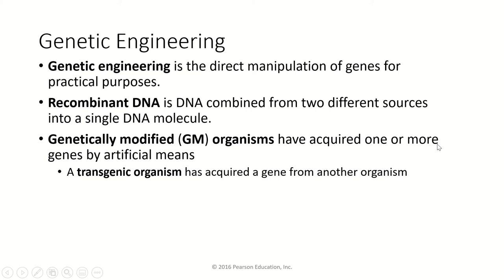Most genetically modified organisms that you think about have been produced by genetic engineering. But it could be genetically modified by any artificial means, including a really old technique of zapping plant seeds with x-rays and then planting the seeds to see what happens. We've gotten some really interesting foods by this method and you've eaten them. So not all genetically modified organisms are the result of genetic engineering. Any organism that has a gene from another organism — that is, any organism that has recombinant DNA — is considered transgenic.